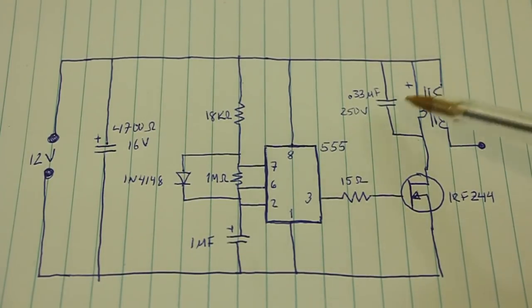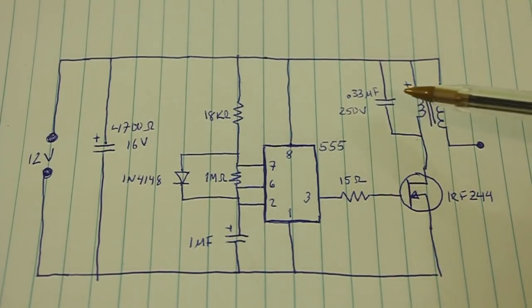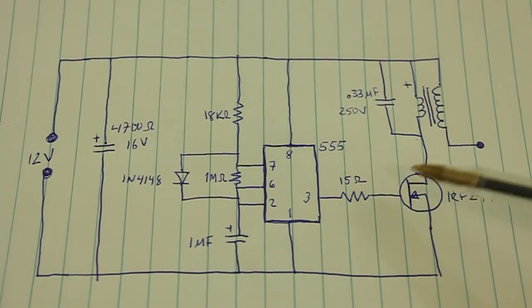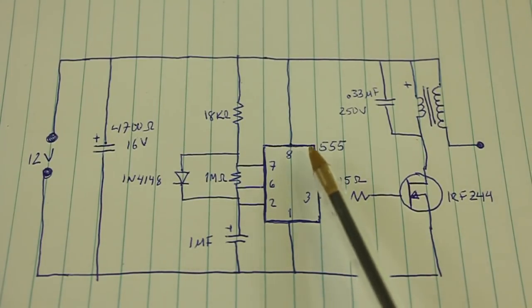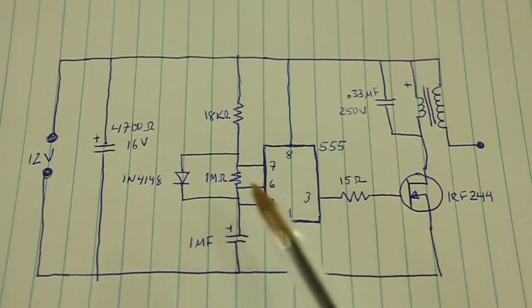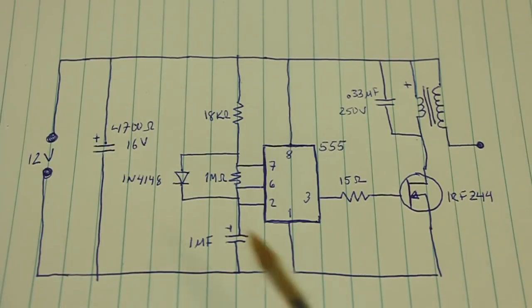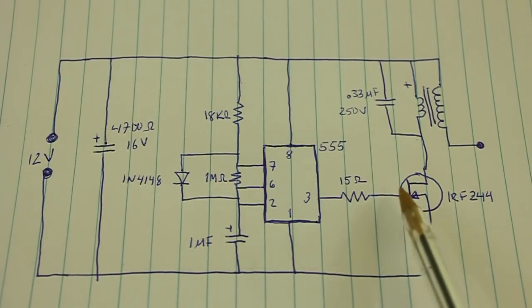The primary of the coil, the positive terminal goes to our positive rail and the negative goes to a MOSFET that acts as a switch. We also have a 555 timer which produces pulses of current that are fed to the gate of the MOSFET.